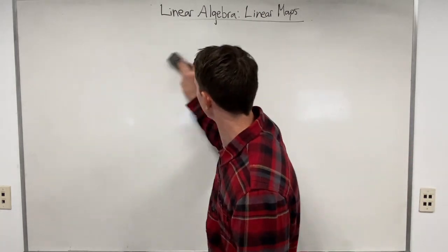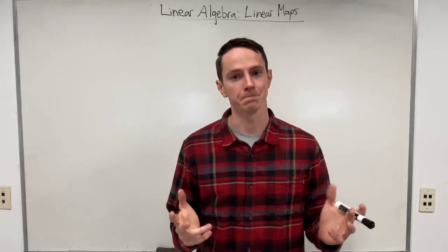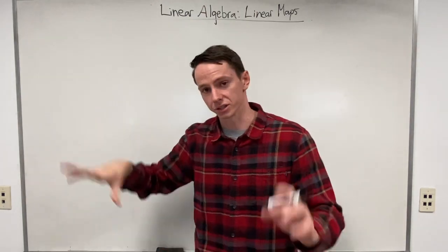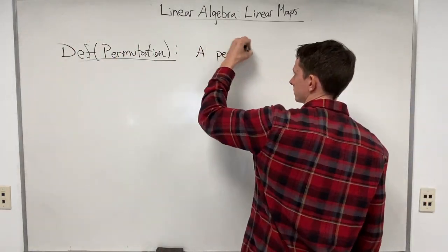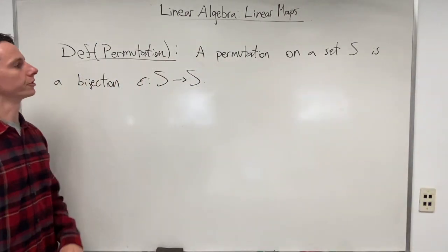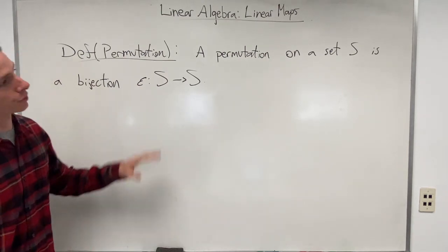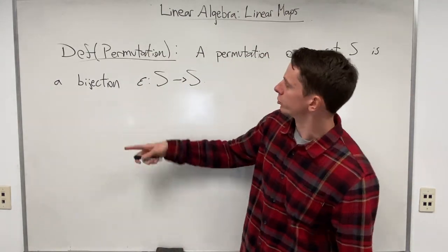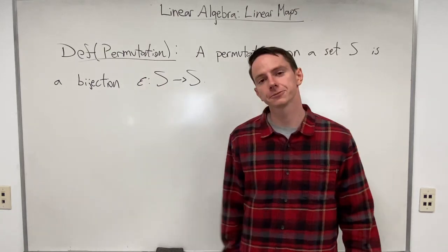In order to understand the Levi-Civita symbol, we first need to understand what a permutation is. I'm going to write out the definition and then go through it as a first step. We have the definition for a permutation: a permutation on a set S is simply a bijection — which the notes call epsilon — that goes from S into S.